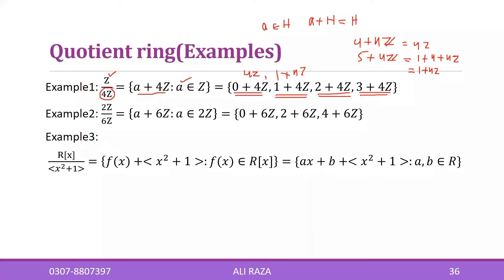When you divide by four, the remainder is either zero, one, two, or three — this is the residue classes concept. So Z modulo 4Z as a factor group is isomorphic to Z₄. In Z₄ we do the same: divide by four, take the remainder. The four elements are denoted zero-bar, one-bar, two-bar, three-bar. That is how you determine a factor ring.